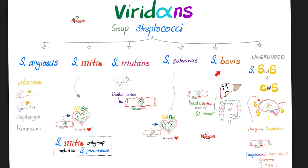Streptococcus bovis can lead to endocarditis and bacteremia in humans, particularly in patients with GI malignancy — especially colon cancer, inflammatory bowel disease, or liver disease.